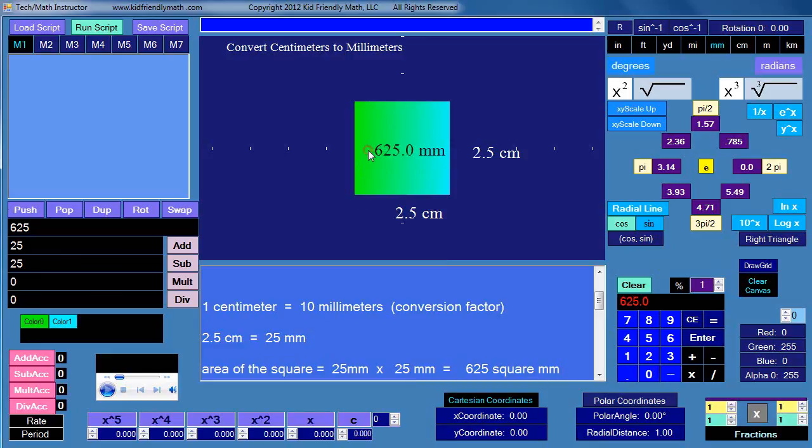I'll put it up here, 625 square millimeters. There's that little squared term right there. We'll just cancel that one out so you don't see it.